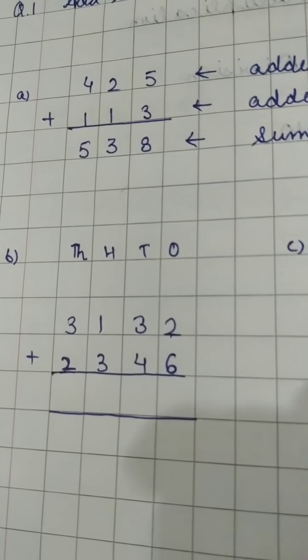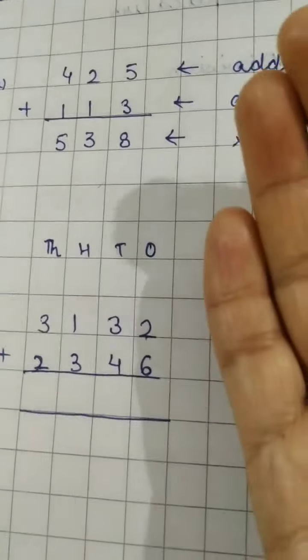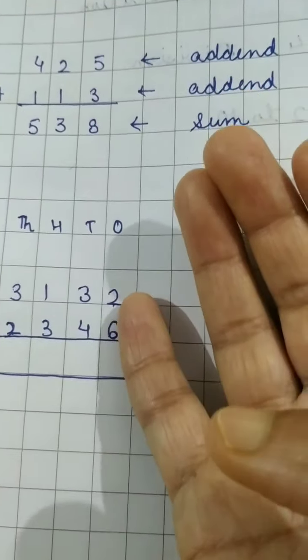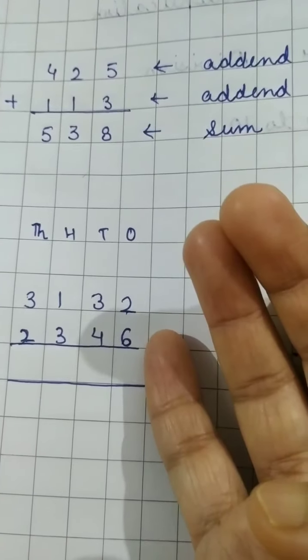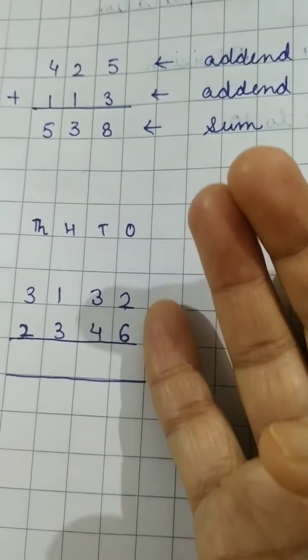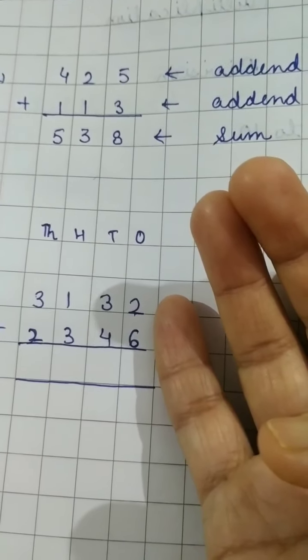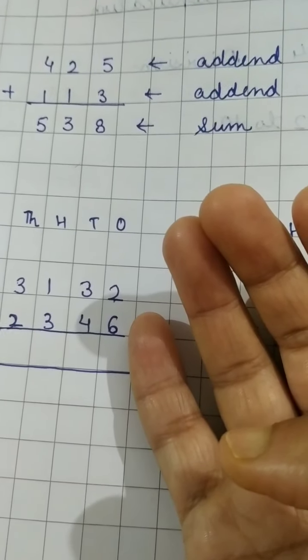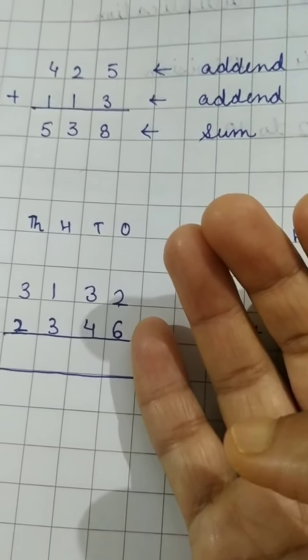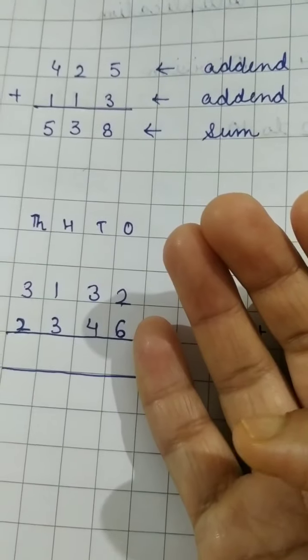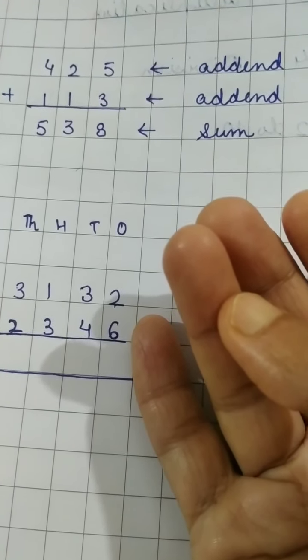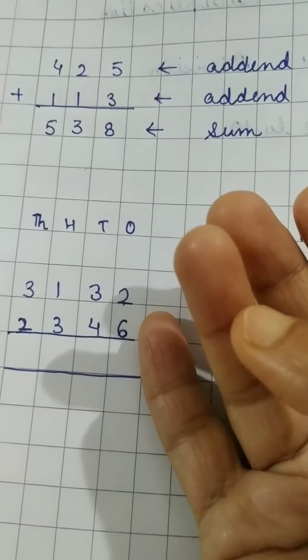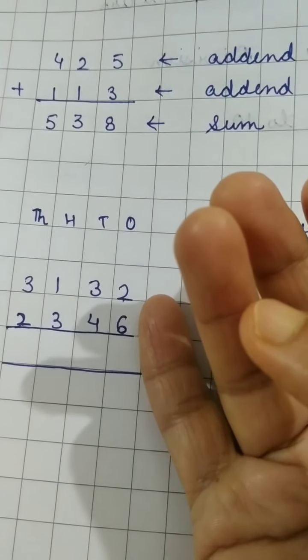Now see children, I think all of you are very clear with this thing that you are not supposed to draw the lines to add the digits now. Now you all have to do it on your fingers. See first of all you can take any of the number in your mind and then the second number you have to count on your fingers. With practice only it will come.